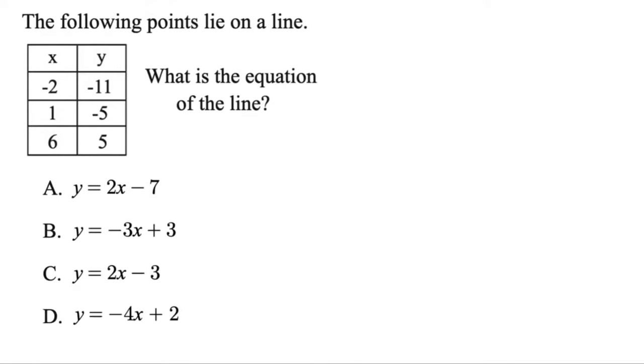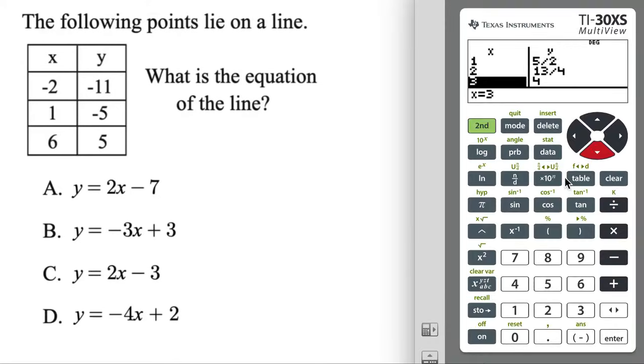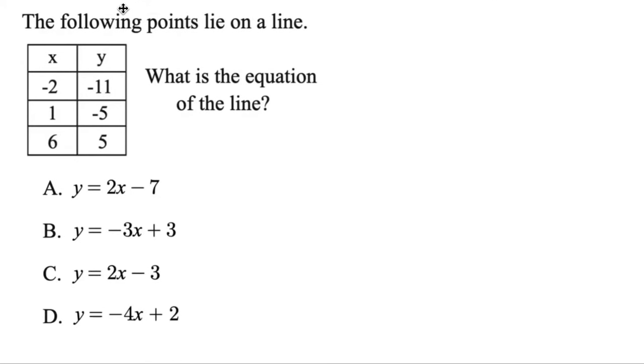And then a final way that they could ask these types of questions. They could give you the table of values, but it's still the same thing. We see Y equals. We know, okay, we could just go ahead and use the table, try them all out. Same thing. That one's going to be A right there.